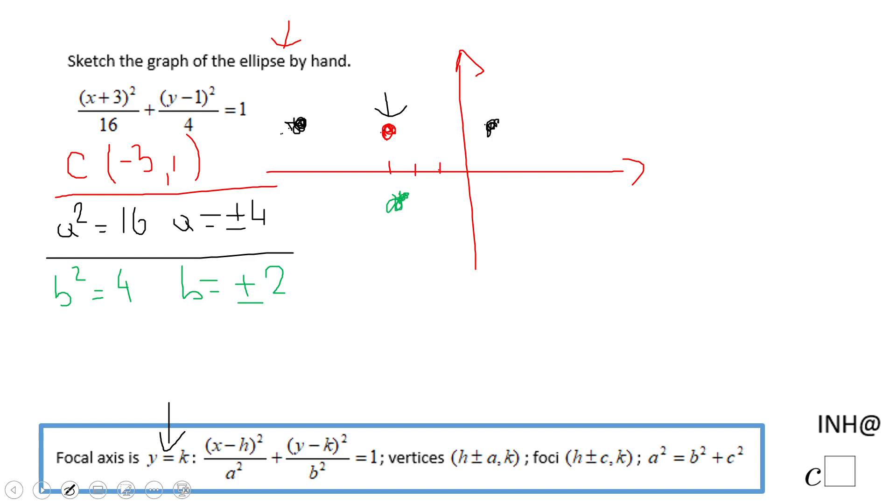negative 1. And then I'm going to move 2 up. That will be negative 3 and positive 3. And I have the ellipse now.